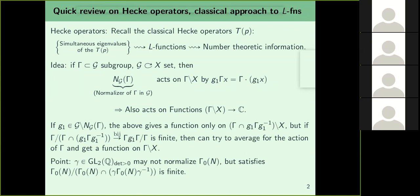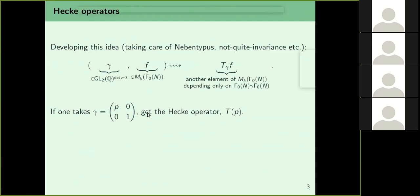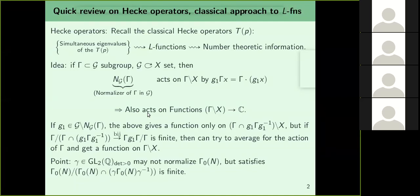But if that index is finite you can average and still get a function on X mod Γ. So if you have a typical element of GL₂(ℚ) with positive determinant, it may not normalize Γ₀(N), but since there is some finiteness condition you can hope to sum and get maps from H mod Γ₀(N) to H mod Γ₀(N). This is roughly the crude idea behind Hecke operators — going from one tiling of the upper half-plane to a finer tiling and back.